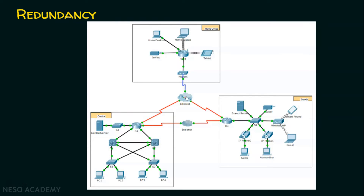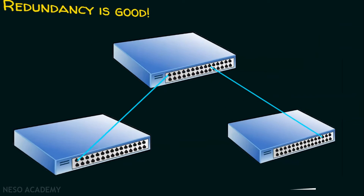Similarly, PC1 can take multiple other paths to reach the internet. We have multiple paths for PC1 to reach the internet. In case this path fails, PC1 has another way to reach the internet. So redundancy is always good. But in a switching world, redundancy causes some serious drawbacks. Let's see what that is.